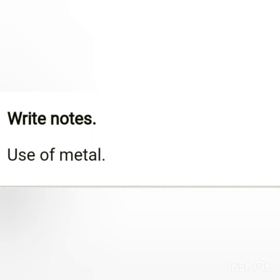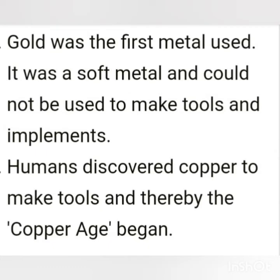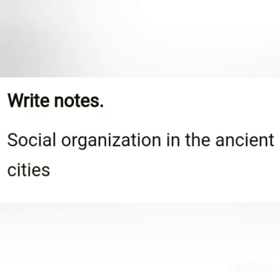Now we have to write the short notes. The first short note is use of metals: Gold was the first metal used by man. However, gold is a soft metal and cannot be used for making tools and implements. So copper and iron were used for making tools and implements.